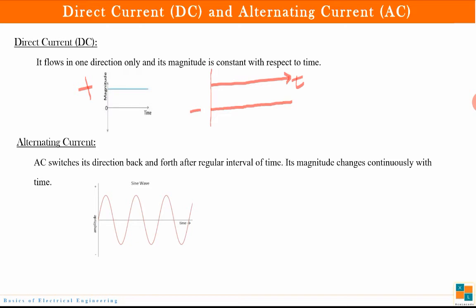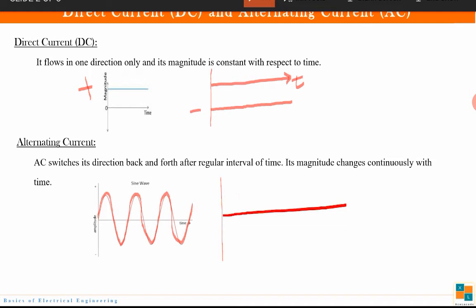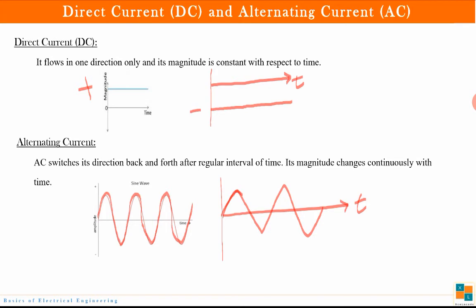Another important point is that the amplitude or magnitude of AC continuously changes with respect to time. Here a sinusoidal signal is shown. The signal magnitude is changing with time as a function of sine theta. It is not necessary that the signal will always be a sine wave — alternating current can also be a triangular wave.